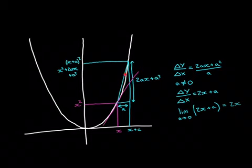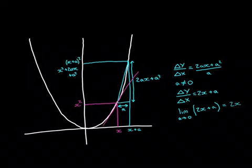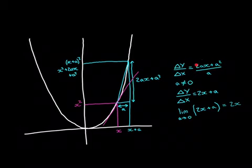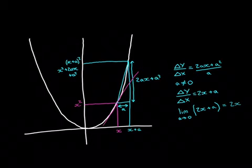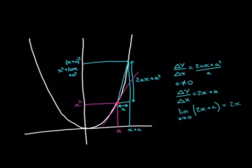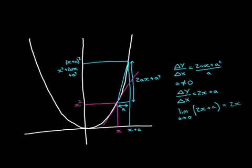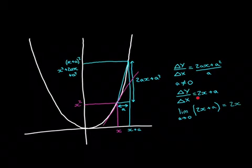We create a formula for the gradient of the secant line for a general change delta x equal to a, going forward to the point x+a. The function value there is (x+a)², which expands to x²+2ax+a². Delta y equals (x²+2ax+a²) minus x² which gives 2ax+a². Dividing by delta x equal to a, and cancelling (since a≠0), gives the general formula 2x+a.